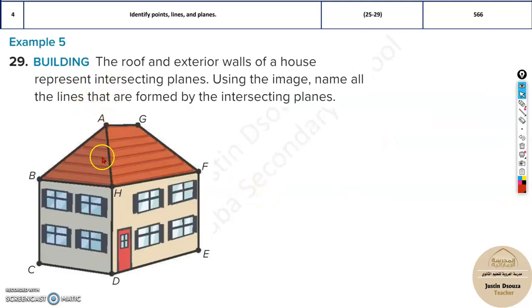Now, similarly over here, they have given another figure. The rooftop and exterior walls of the house represent intersecting planes. Use the image. Name all the lines that are formed by the intersecting plane. So now you must just name all the lines where two planes are intersecting. So whenever one plane will intersect to one more plane, they intersect at a line.